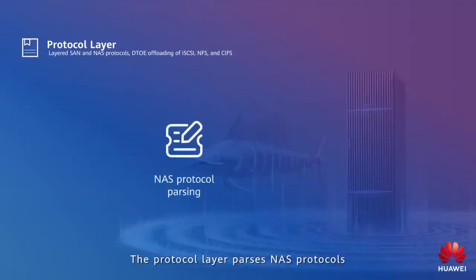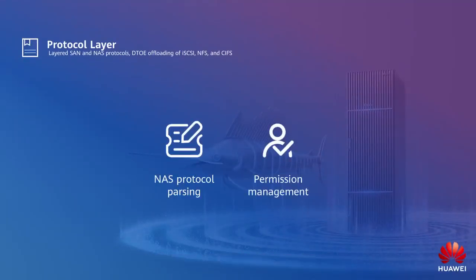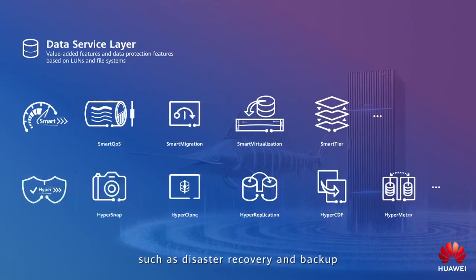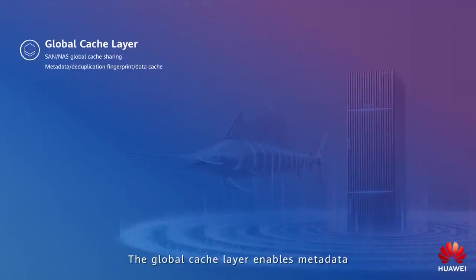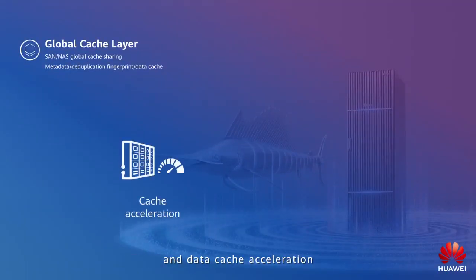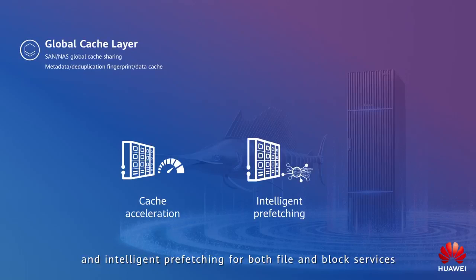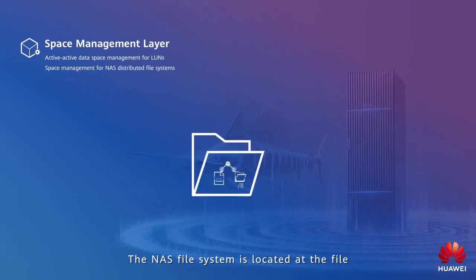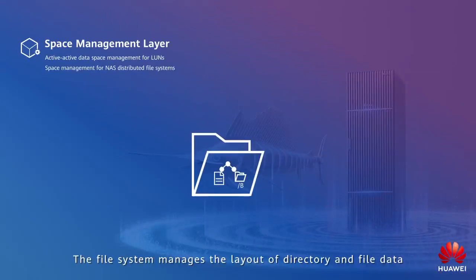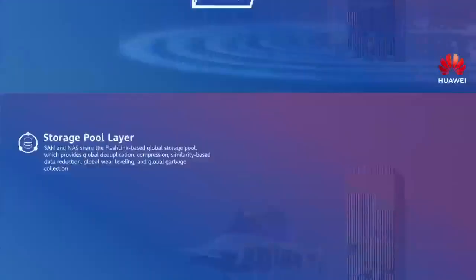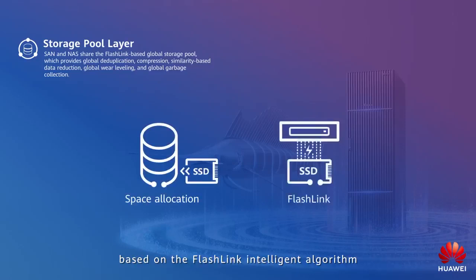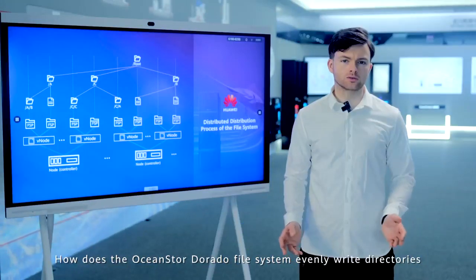The protocol layer passes NAS protocols and implements permission management. The data service layer contains value-added features such as disaster recovery and backup. The global cache layer enables metadata and data cache acceleration and intelligent prefetching for both file and block services. The NAS file system is located at the file and block space management layer, which manages the layout of directory and file data.